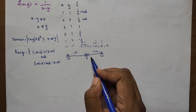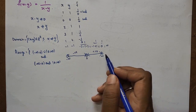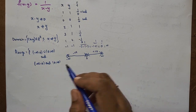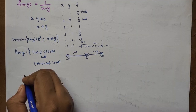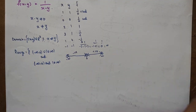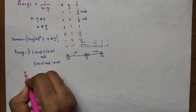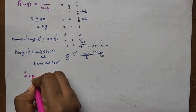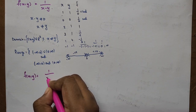These two intervals — negative values and positive values — are both possible. Now the next problem: f(x,y) = 1/(x + y).